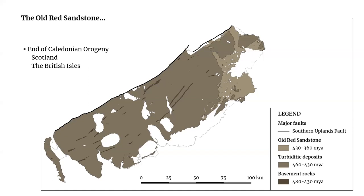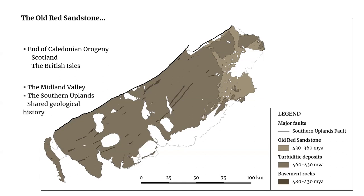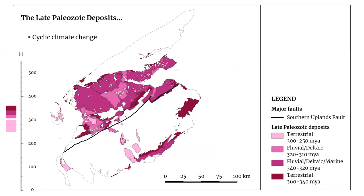At the end of the Caledonian orogeny, Scotland was assembled in its current form — and not only Scotland, but the British Isles were in their current configuration as well. With the deposition of the Old Red Sandstone, the two accretionary terrains, the Midland Valley and the Southern Uplands, enter a period of shared geological history. This shared history between the Midland Valley and the Southern Uplands is best seen with the deposition of the Late Palaeozoic sediments. If you remember from last time, these rocks are widespread in the Midland Valley. The very same rock succession is also present in the Southern Uplands, though it doesn't cover such a wide area, with outcrops limited mostly to the south and east, and only insular occurrences in the centre and west.